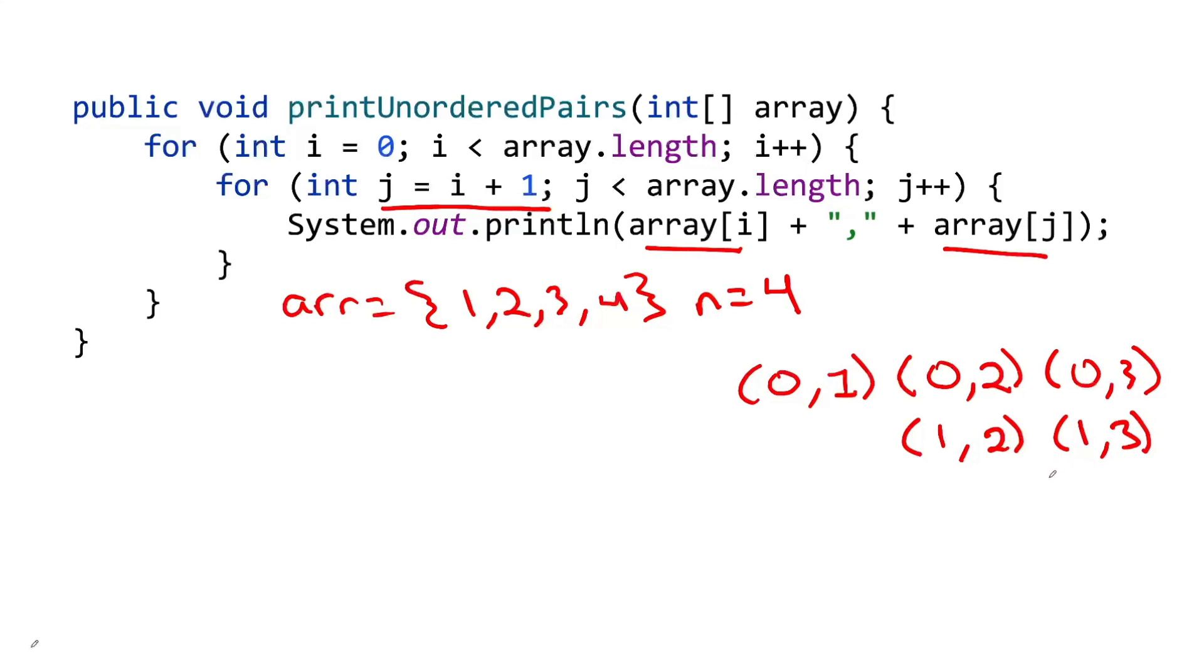We increment j again. It goes from 3 to 4. Well, now j is 4. 4 is not less than 4. So we're done with the inner loop. Go back to the outer loop. We increment i, which it goes from 1 to 2. And then on the inner loop, j is equal to i plus 1, or j is equal to 2 plus 1. So now, on the first time through the inner loop in this iteration, we have 2, 3. And we increment j. j goes from 3 to 4. However, 4 is still not less than 4. So we're done with the inner loop.